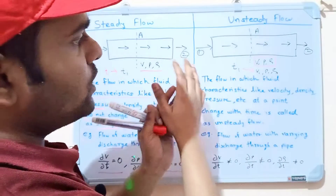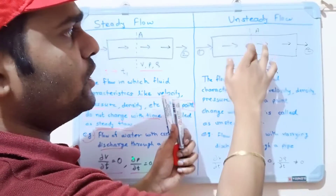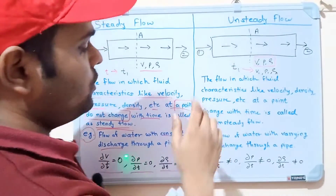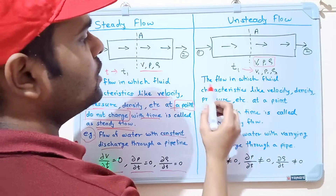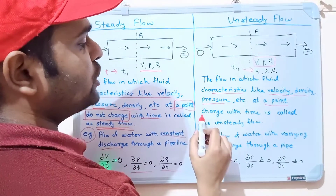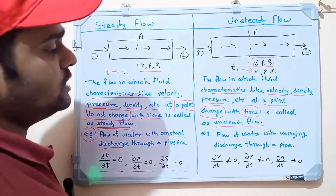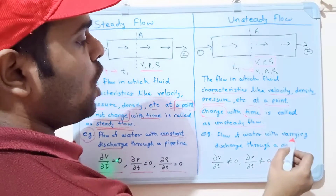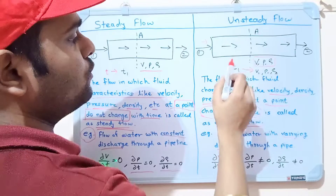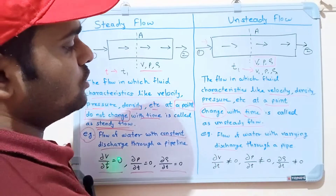From this example we understand that when fluid passes through the pipe and the fluid characteristics at a point change with time, this flow is called unsteady flow. Definition: the flow in which fluid characteristics like velocity, density, pressure, etc. at a point change with time is called unsteady flow. An example is the flow of water with varying discharge through a pipe, where the discharge is varying.